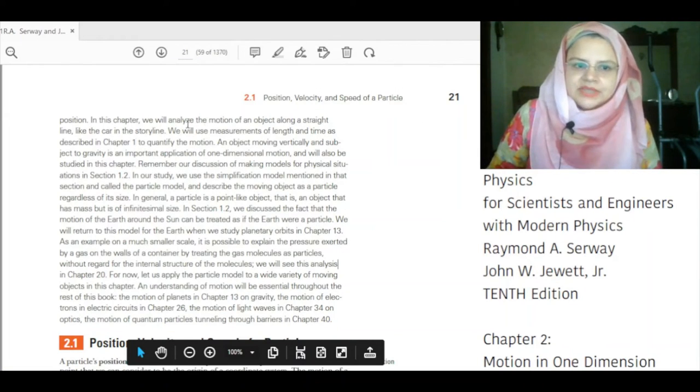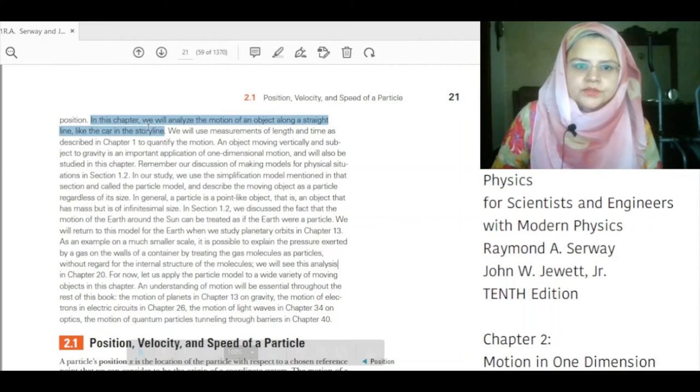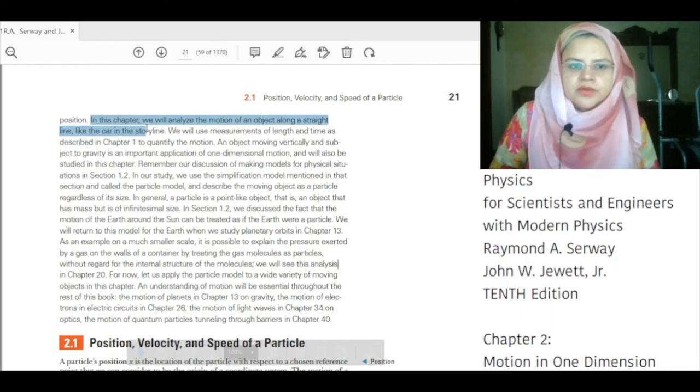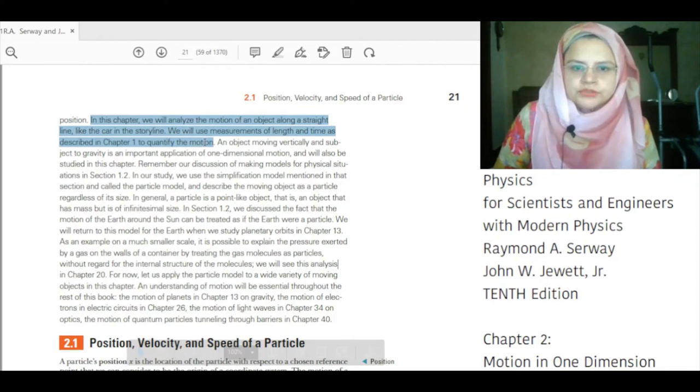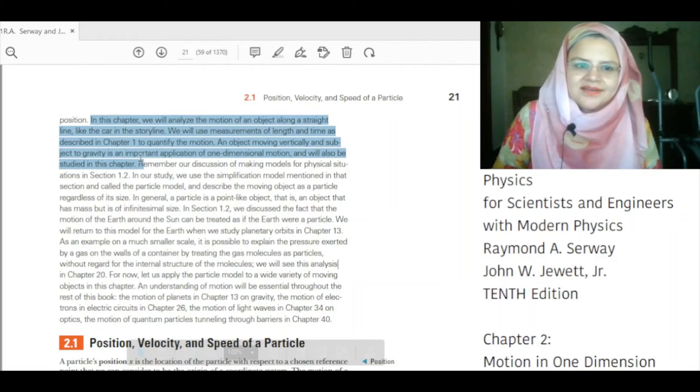In this chapter, we will analyze the motion of an object along a straight line like the car in the storyline. We will use measurement of length and time as described in chapter 1 to quantify the motion. An object moving vertically subject to gravity is an important application of one-dimensional motion and will also be studied in this chapter.